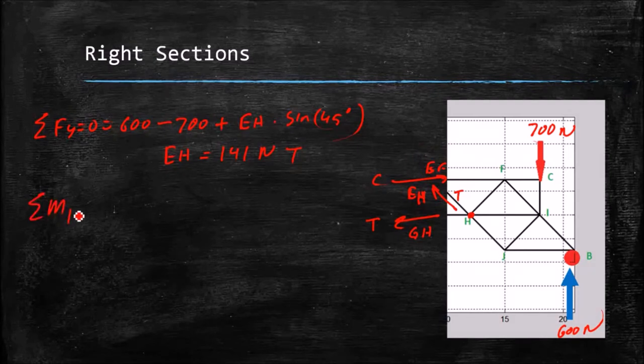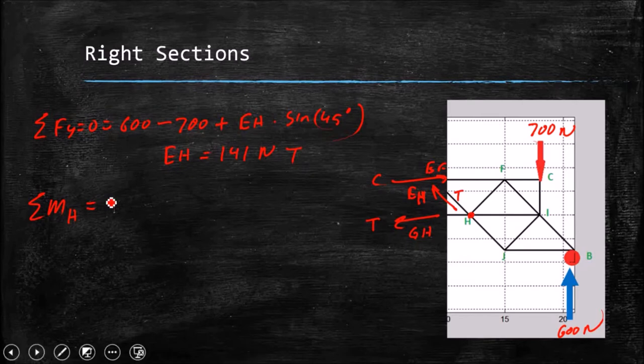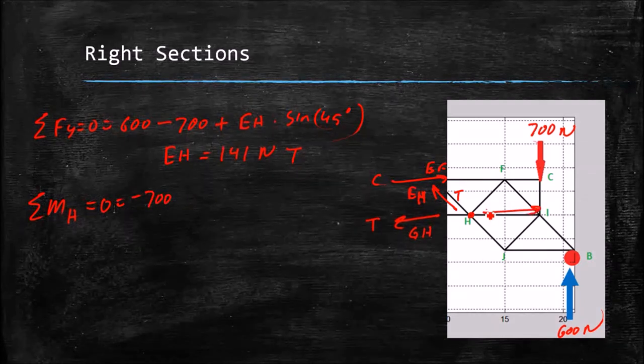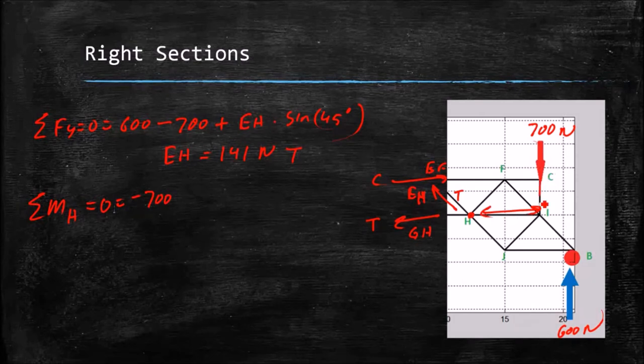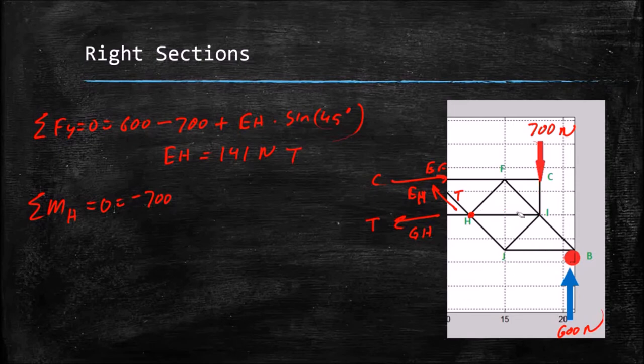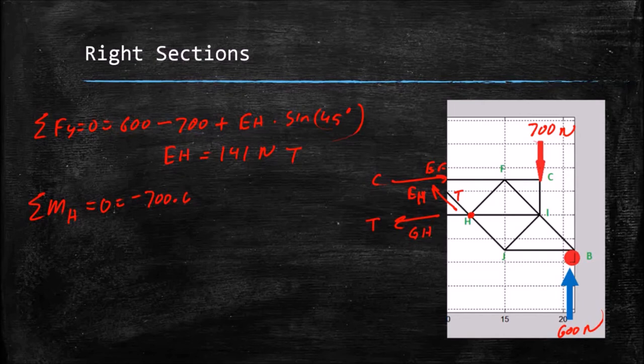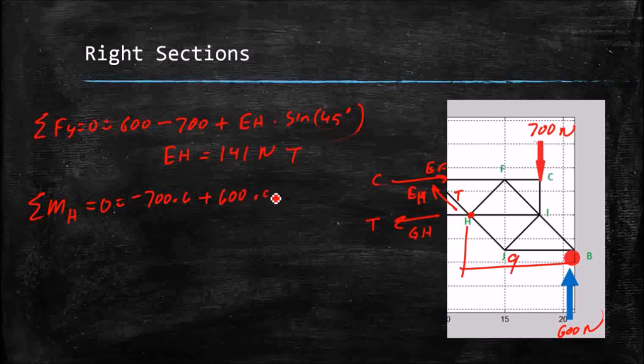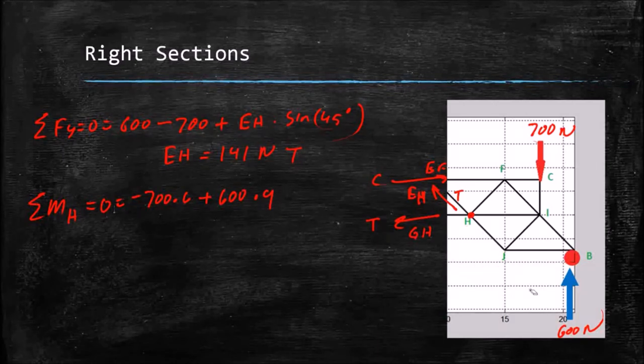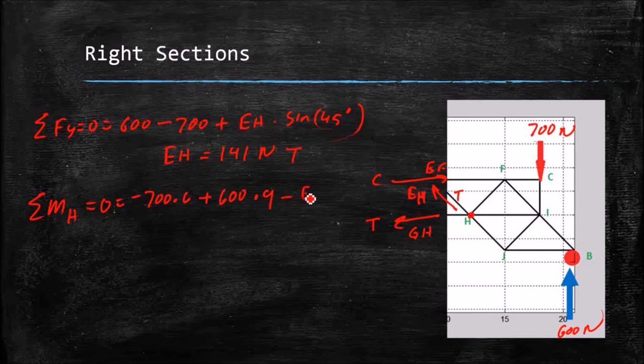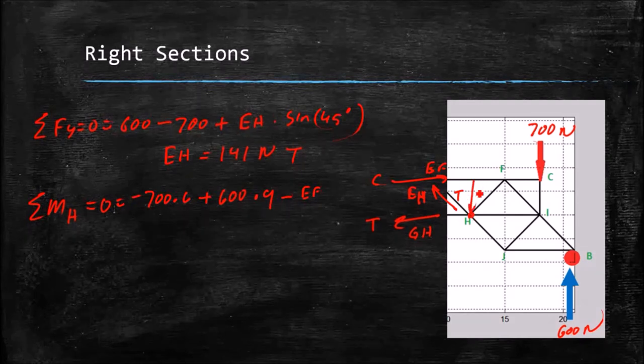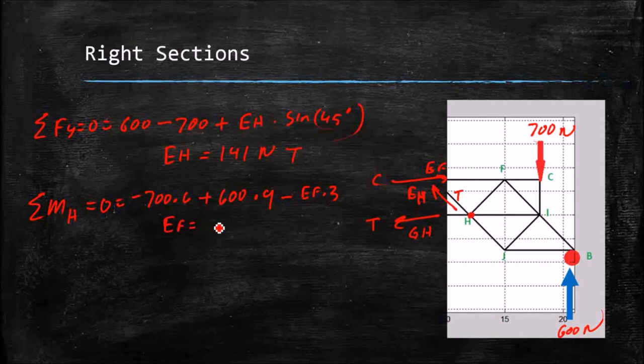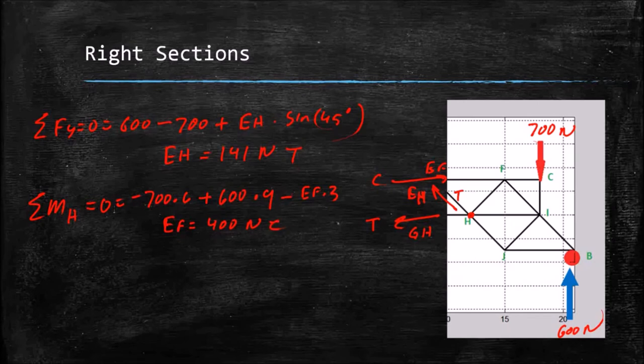So if I do the sum of the moments of H, I've got H equals zero, and it's equal to minus 700 times this distance here, which is 6 meters from H perpendicular to the line of force there. And that's clockwise, so it's negative. And plus 600 newtons, and this perpendicular distance here is 9 meters. And that's counterclockwise, so that's positive. Minus EF, because it's giving me a clockwise moment, times this distance here, which is 3 meters. And working that out, I get EF equals 400 newtons in compression, same as the other side.